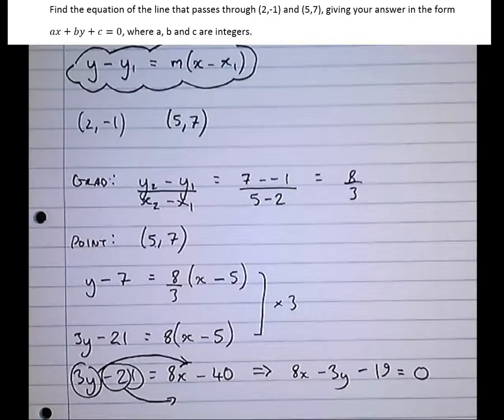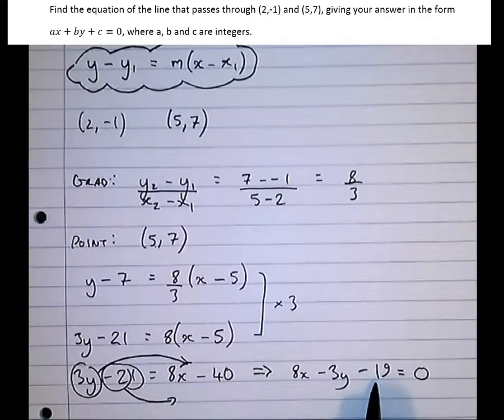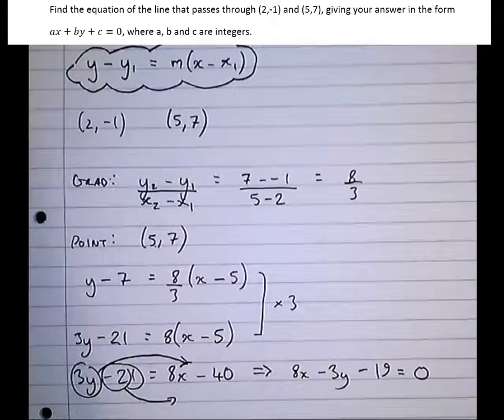And now we've got it in the form requested. 8x minus 3y minus 19 equals 0. So the number in front of x is an integer, the number in front of y is an integer, and the number on its own, minus 19, is also an integer.